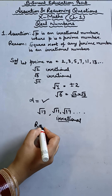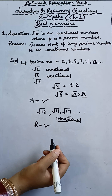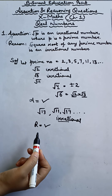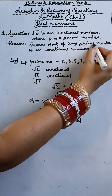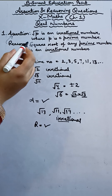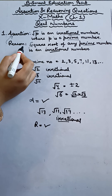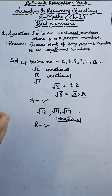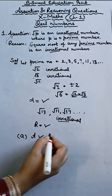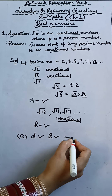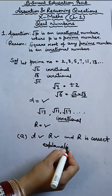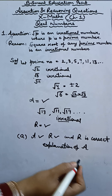Let's check the reason now. The square root of any prime number is an irrational number. We have already taken examples — you can take any prime number, such as 11, 13, and so on. Root 11, root 17 — any square root of a prime number will always be an irrational number. So our reason is also right. The reason is explaining and simplifying the assertion, as both discuss prime numbers and irrational numbers — so the reason correctly explains the assertion. Therefore, option A is correct: assertion is correct, reason is correct, and reason is the correct explanation of assertion.